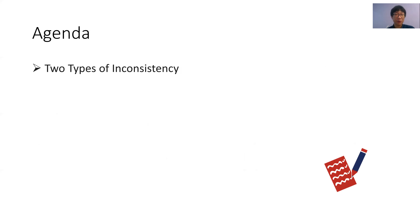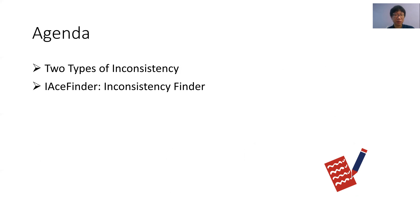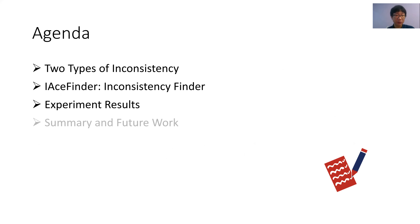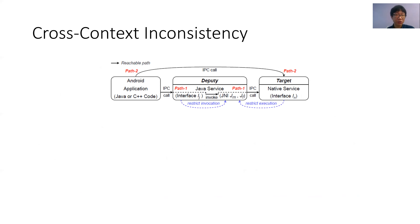In the following, I will first introduce two types of cross-context inconsistent access control enforcement in Android. Then I will introduce the design of IAceFinder, a tool for discovering cross-context inconsistent access control enforcement. Subsequently, I will present our main experiment applying IAceFinder to 14 open-source Android distributions. At last, I will summarize the work and propose our future work.